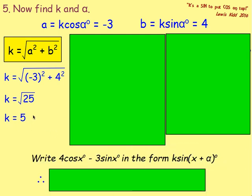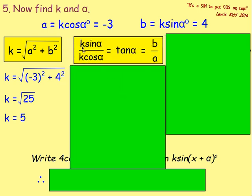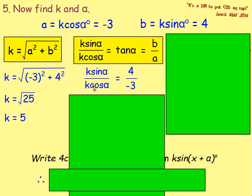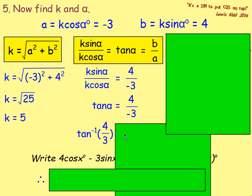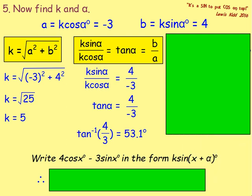So that has found the value of k. To find the value of α, you divide k sin α over k cos α, cancel the k's, and sin over cos is tan. So tan α equals 4 over negative 3, or negative four thirds. Work out the size of the acute angle — ignore the negative — and work out tan to the minus 1 of 4 thirds. If you work that out on the calculator, you get 53.1 degrees.